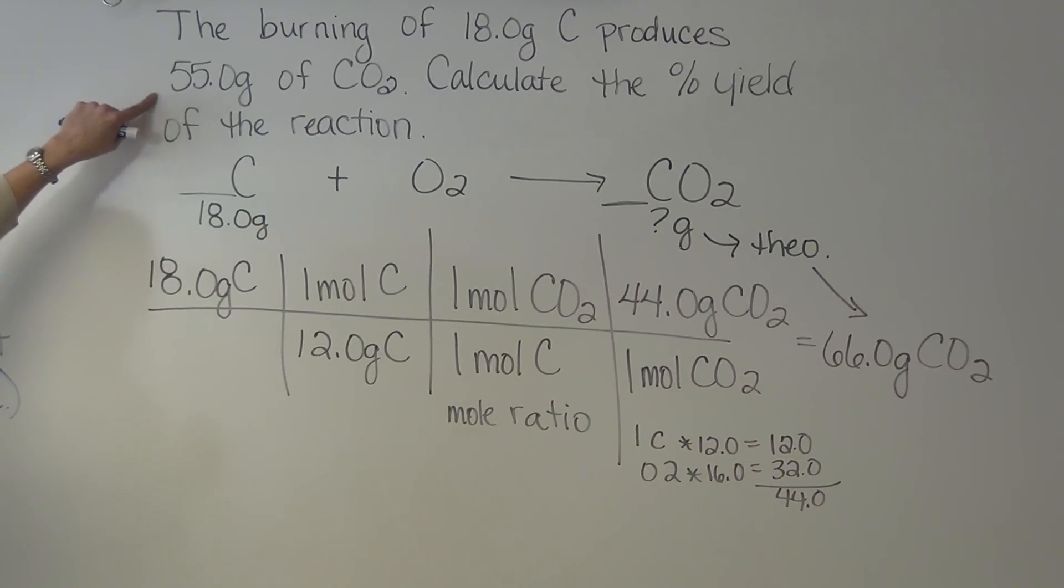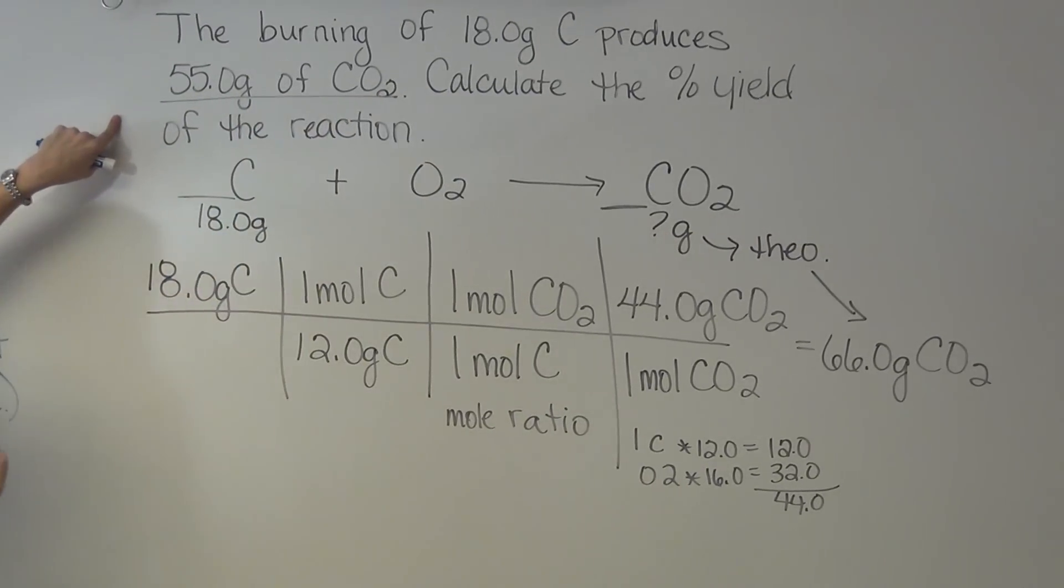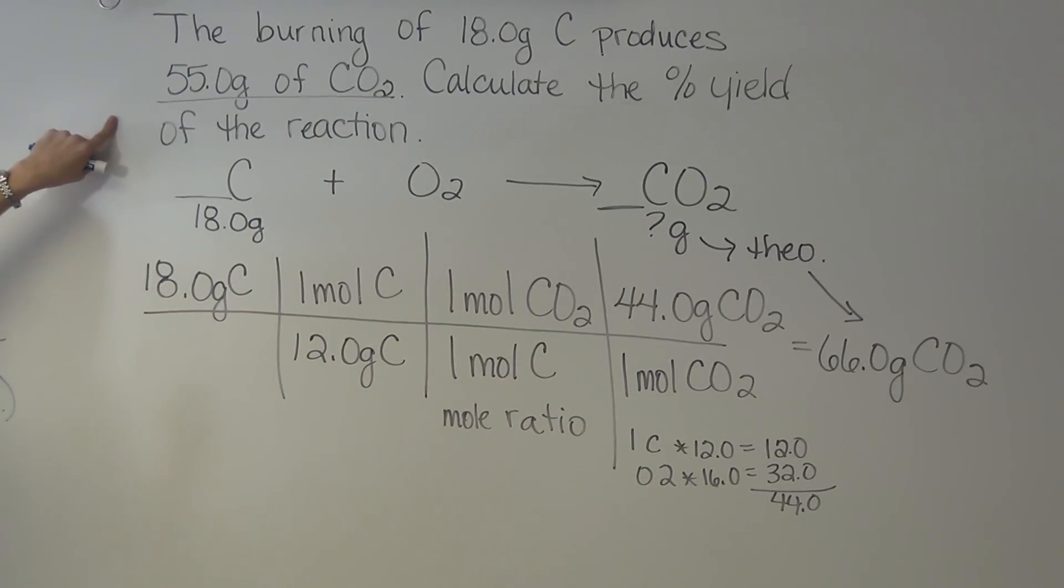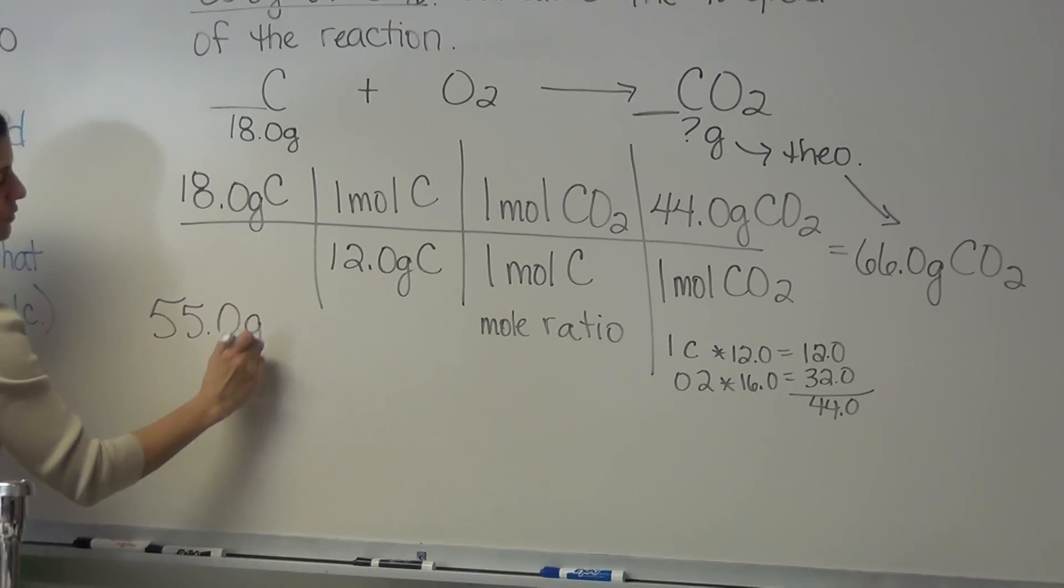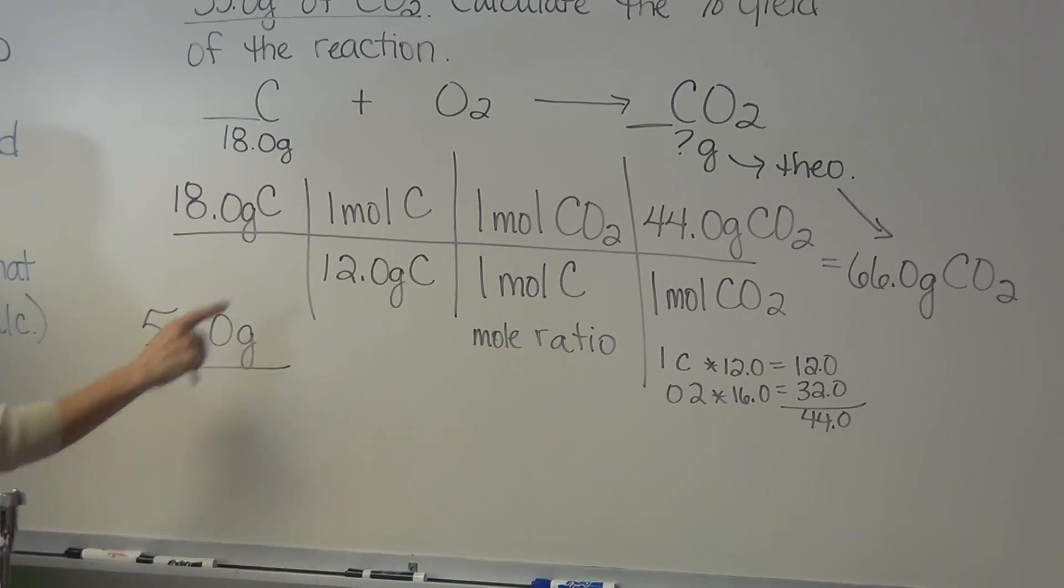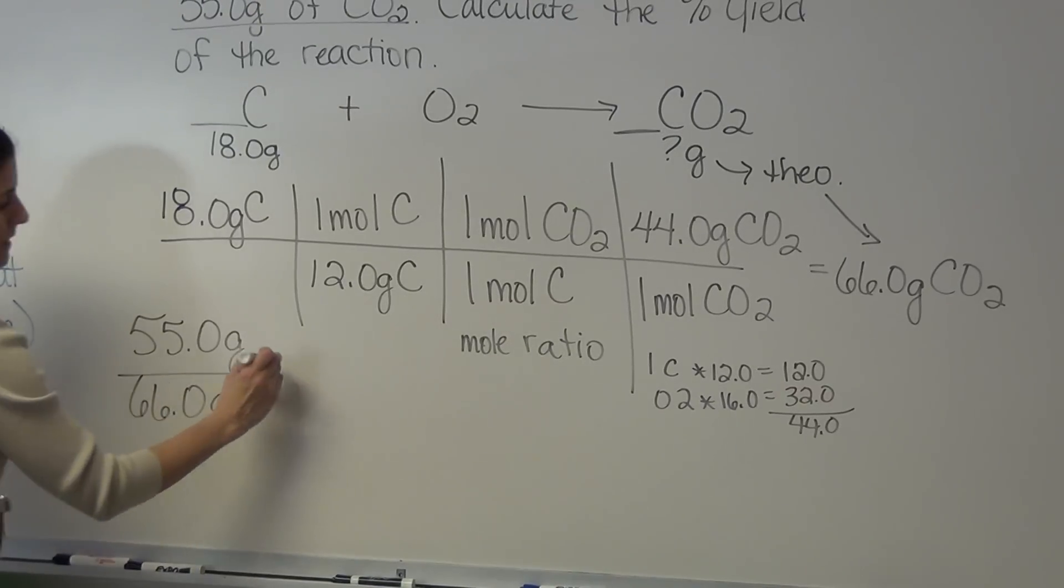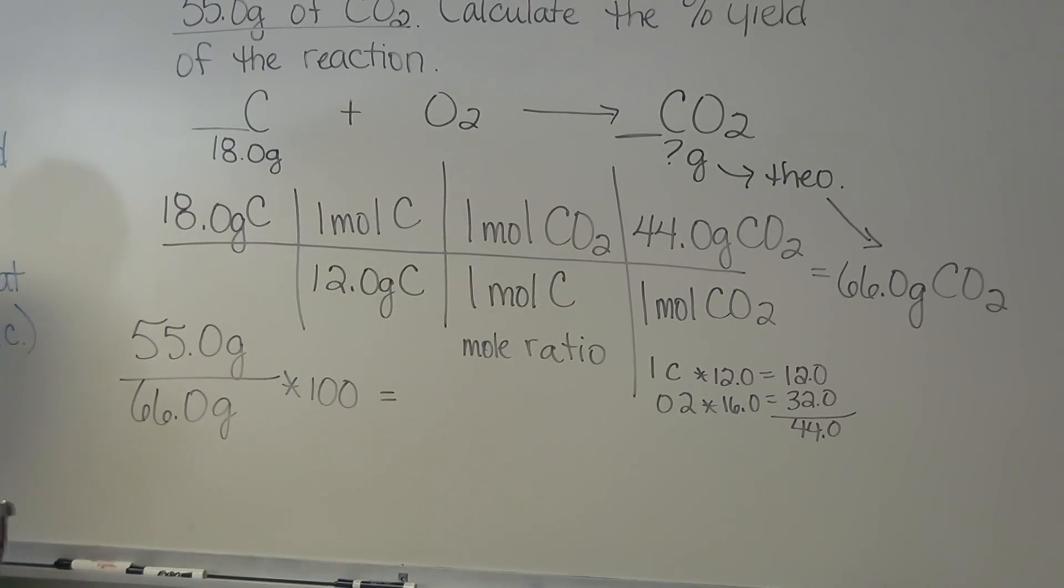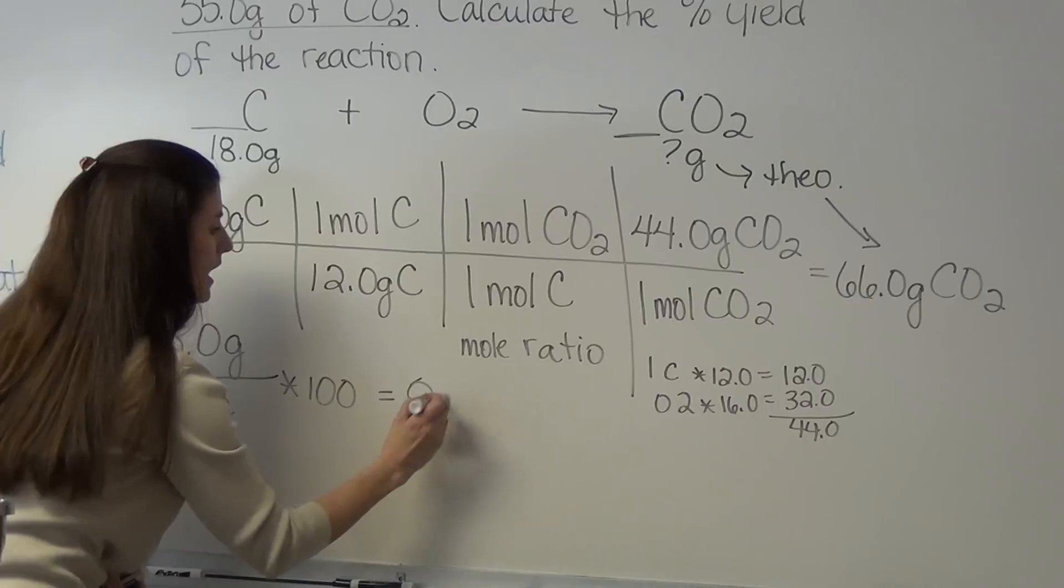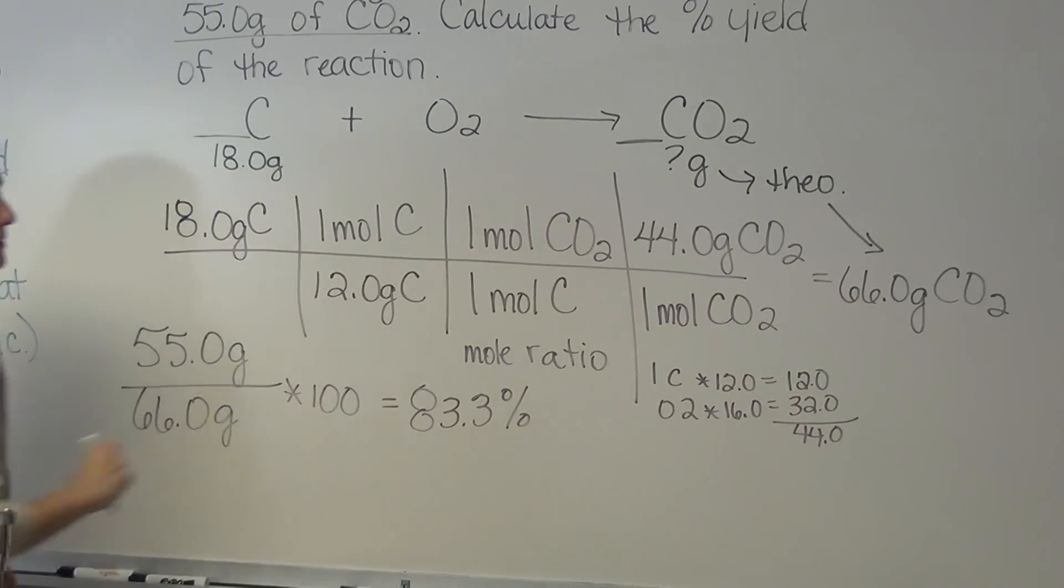Now we compare it to what we got in the lab. It says that it produces 55 grams of CO2. Using our formula, we're going to take the actual amount that we got in the lab, which is the 55 grams, over our theoretical 66.0 grams, times 100. Put that into your calculator, and you should get 83.3% as our percent yield.